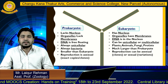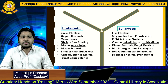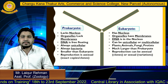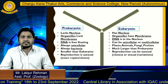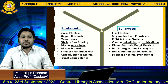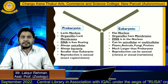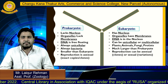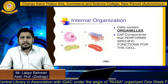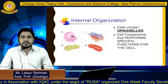Prokaryotes are always bacteria; eukaryotes may be plants, animals, fungi, and protists. Prokaryotes are very small in structure compared to eukaryotes. In prokaryotes, reproduction is asexual, while in eukaryotes reproduction may be asexual or sexual.